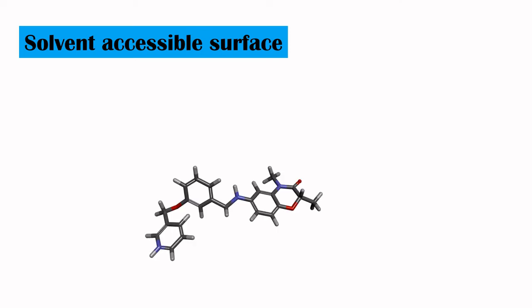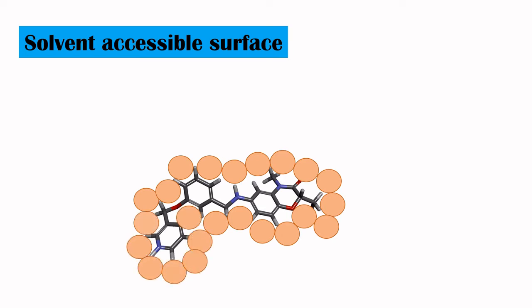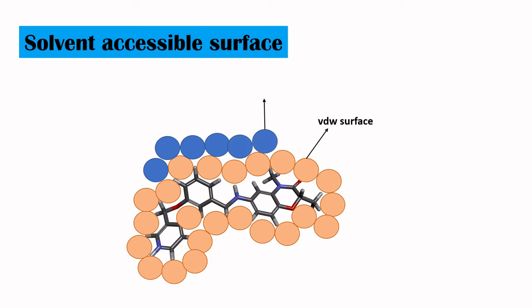Next is solvent accessible surface. In this solvent accessible surface, again we will take the same molecule and rotate the ball around the molecule. When you rotate the spherical ball or the probe, you get the Van der Waals surface. And again, we will be taking another sphere which is having the same radius of 1.4 angstroms around the Van der Waals surface. When you take the center of these balls — the spherical balls having the 1.4 angstrom radius — and draw a line covering the center of the probe, this area is accessible to the solvents. Hence, it is known as solvent accessible surface area.